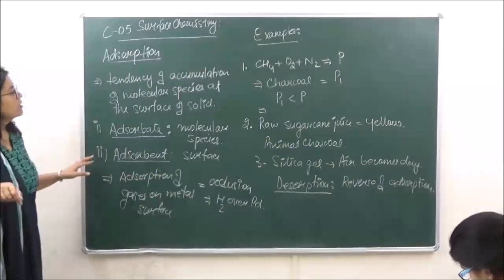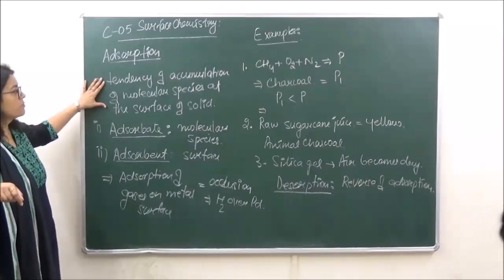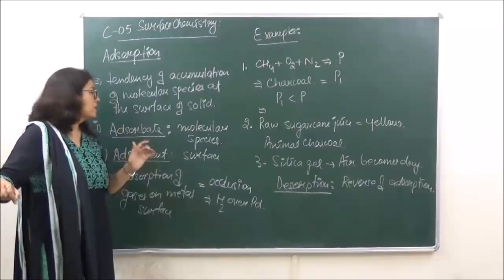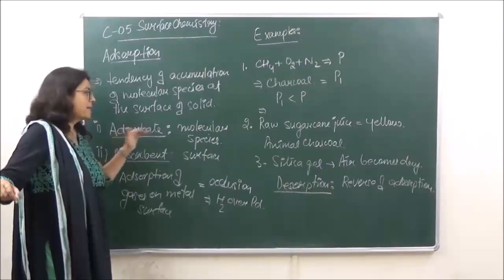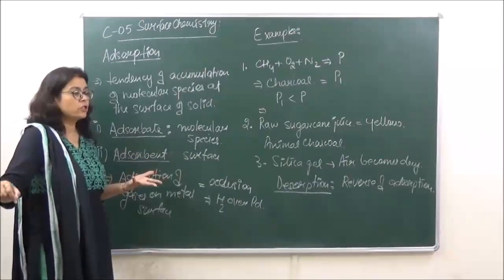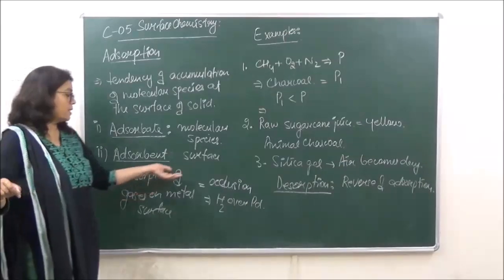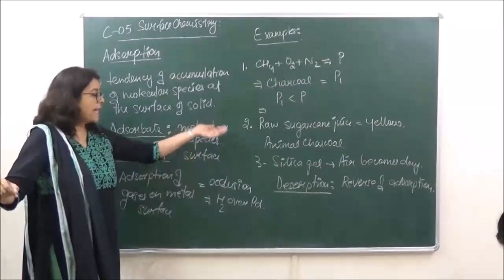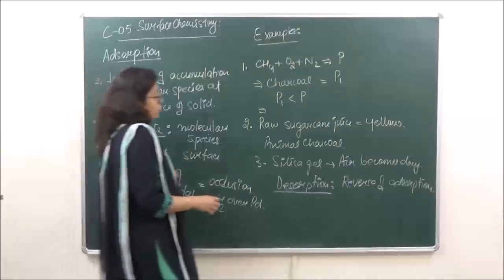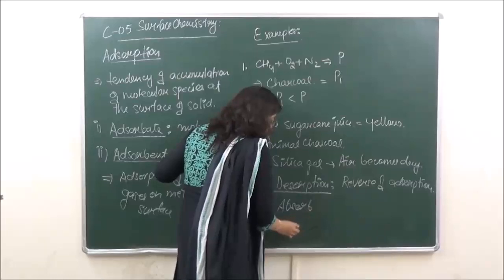To summarize: adsorption is a surface phenomenon in which molecular species accumulate on the surface. Adsorbate is the molecular species getting adsorbed; adsorbent is the surface on which adsorption takes place. Adsorption of gases on metal is known as occlusion, and desorption is the reverse of adsorption.